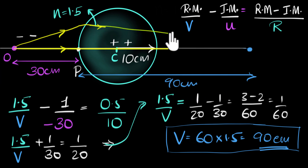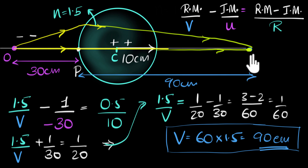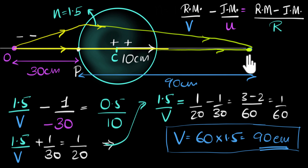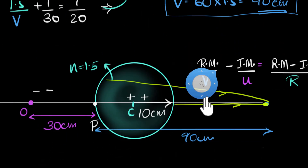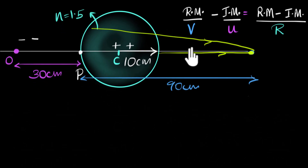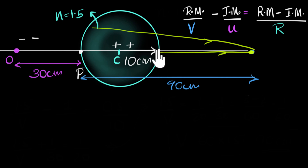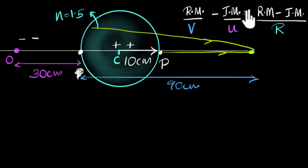But can this be the final answer? These two rays of light, before converging at 90 centimeters, are going to hit the second surface and refract again — which means this cannot be our final answer. So what we have to do next is apply the same formula for the second surface, with this second surface as our new pole.